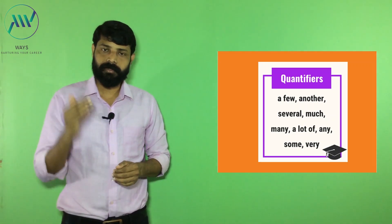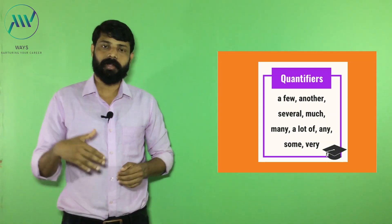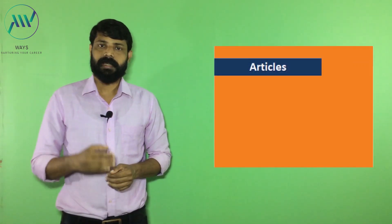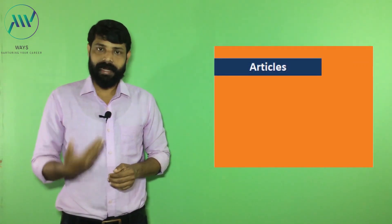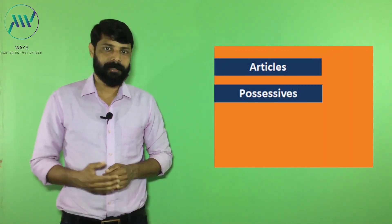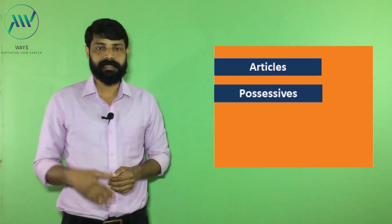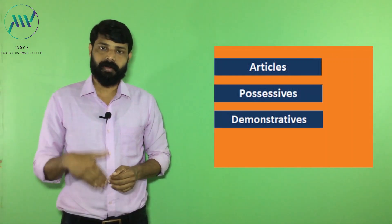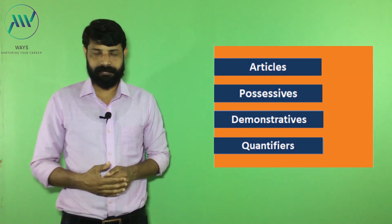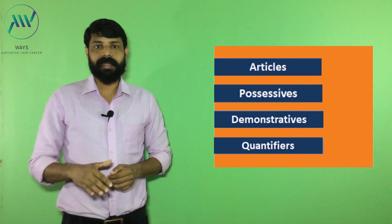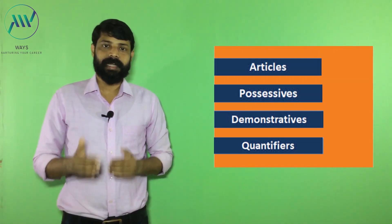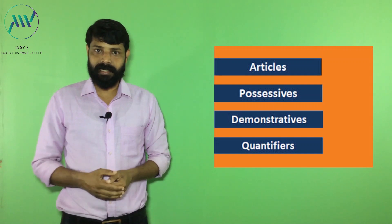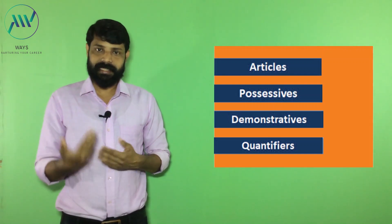Now we have talked about four types of determinants: first, articles; second, possessive; third, demonstrative; fourth, quantifiers. Anyway, we need to discuss each one separately. We will do it in the next video.